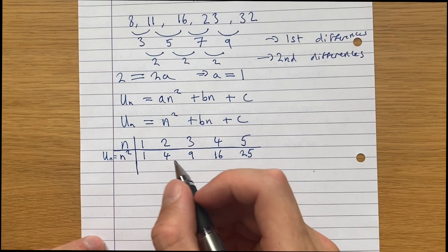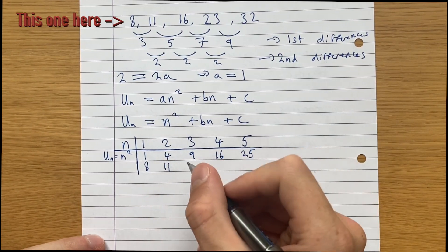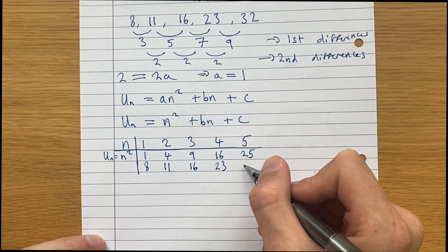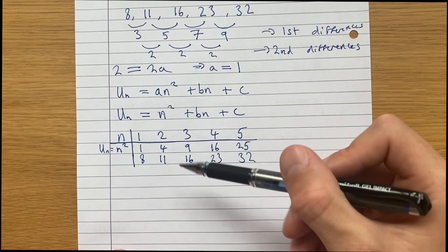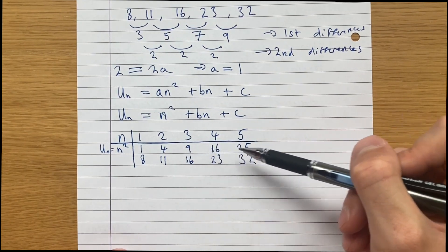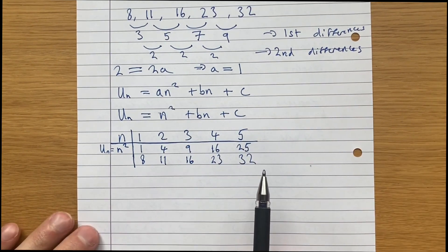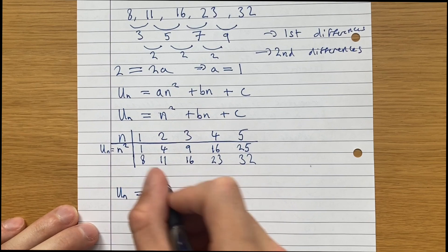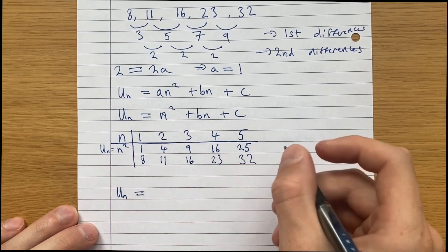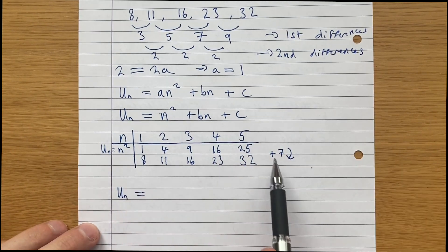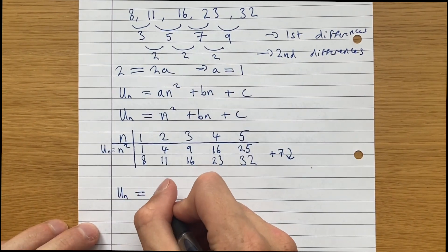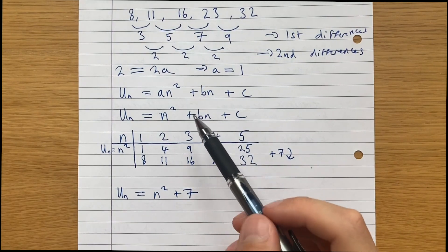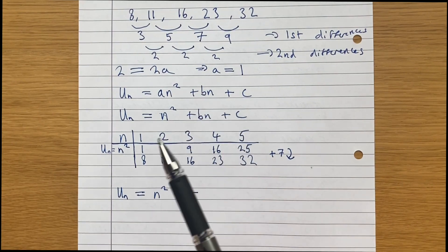And our actual sequence is 8, 11, 16, 23, 32. Just by inspection, we can see that the difference between the terms here is just 7. So what we get is that un is equal to n squared, which is this, just plus 7, because you're just adding 7 to get to our sequence from n squared. So un equals n squared plus 7. In this example, it just so happened that b was equal to 0, which made life some more easier.